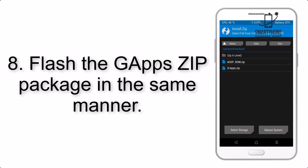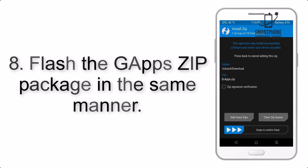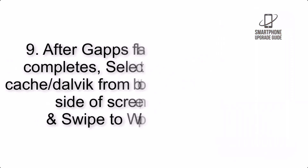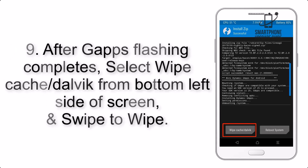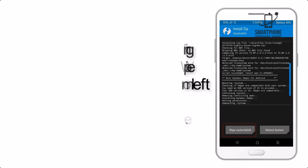Step 8. Flash the GApps zip package in the same manner. Step 9. After GApps flashing completes, select Wipe cache and Dalvik from the bottom left side of the screen, and swipe to Wipe.